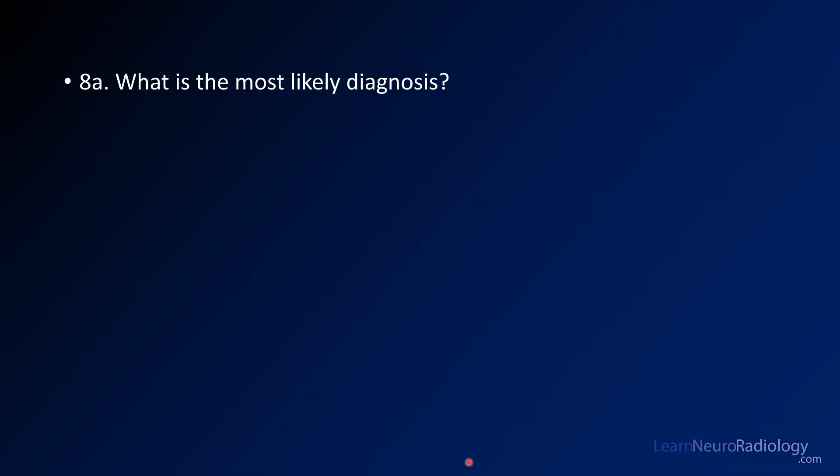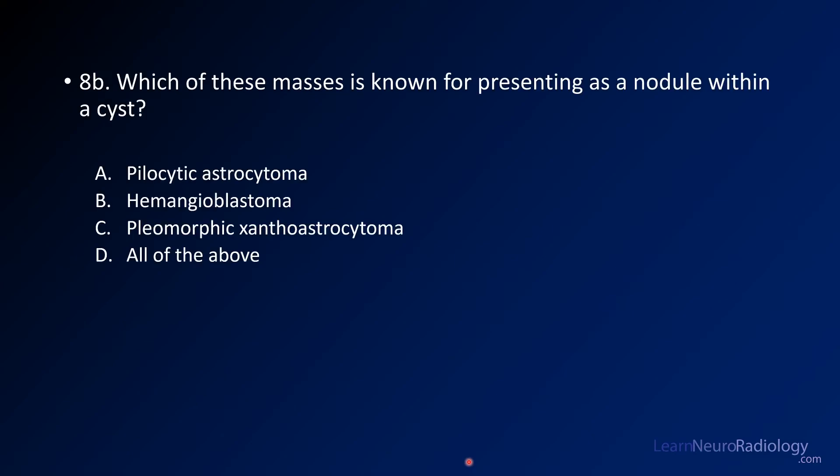Question 8a: what is the most likely diagnosis? And then, which of these masses is known for presenting as a nodule within a cyst? Is it pilocytic astrocytoma, hemangioblastoma, pleomorphic xanthoastrocytoma, or PXA, or all of the above?